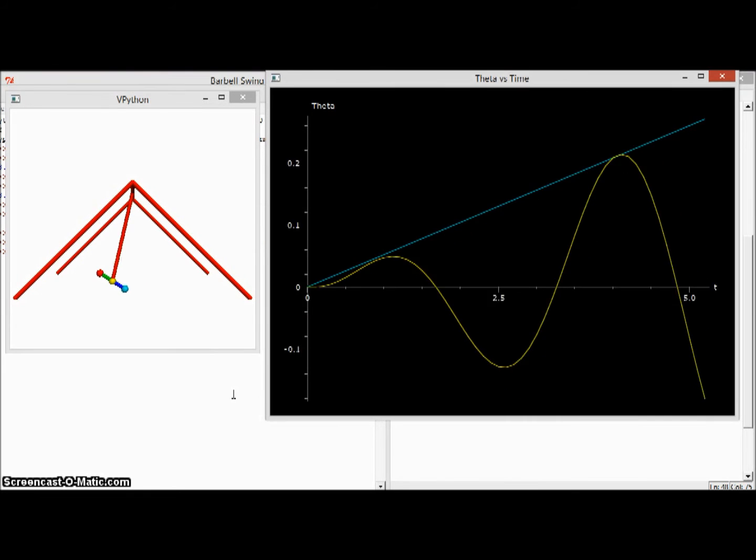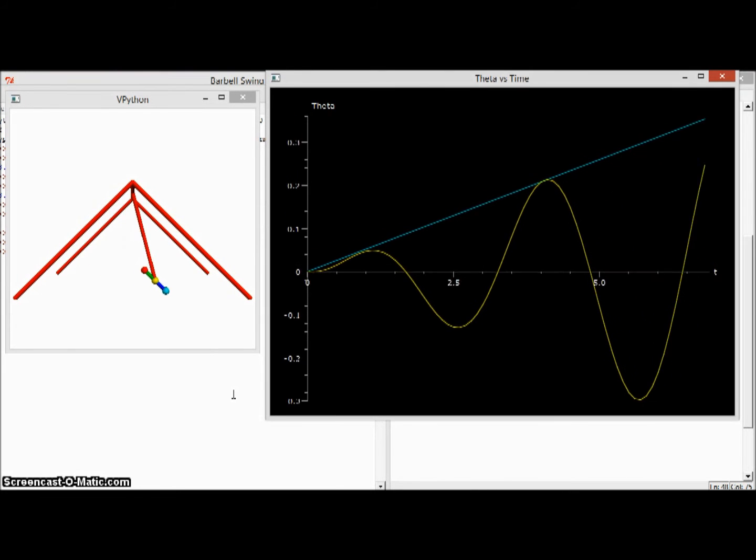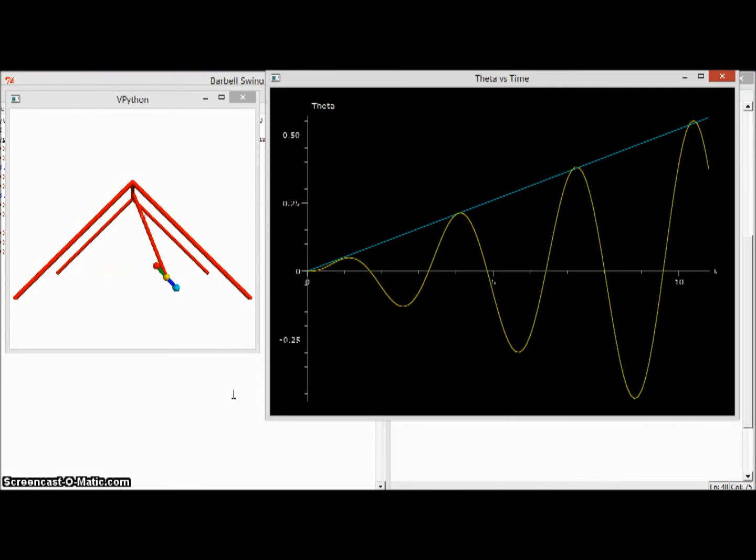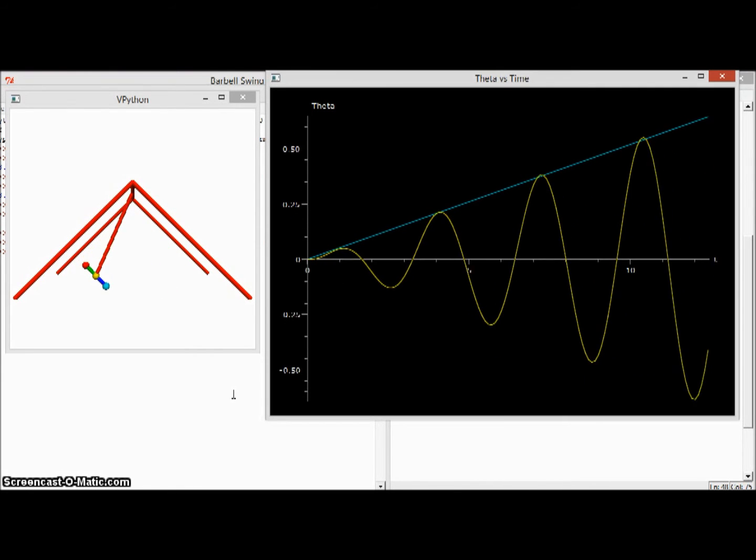As the masses rock back and forth around the center of mass, not changing the center of mass's position, you can see at the graph on the right that the angle phi, which is the angle away from the vertical, increases linearly with time.